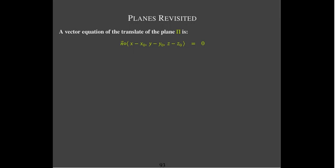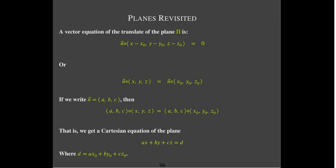Doing some algebra: breaking x minus x0, y minus y0, z minus z0 into two vectors shows that n dotted with (x, y, z) equals n dotted with (x0, y0, z0). This brings us back to our familiar Cartesian equation. Writing the components of the normal vector as a, b, c, we get ax + by + cz = d, where d is the dot product of the normal vector with the specific initial vector on the plane. This is probably a more familiar way of looking at planes for those who had multivariable calculus before linear algebra, and it's an important way to think about planes in R3.